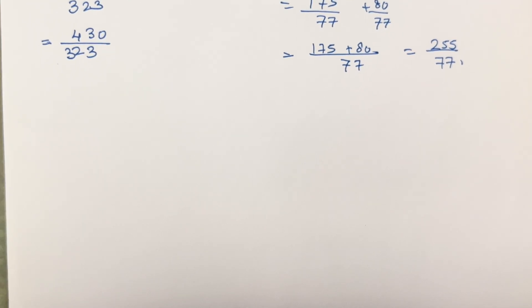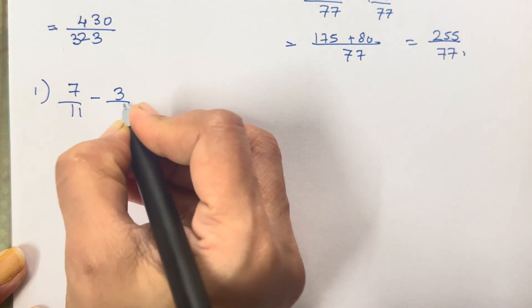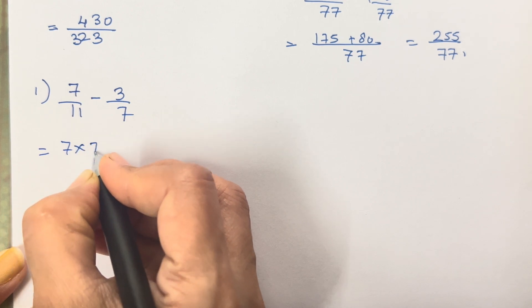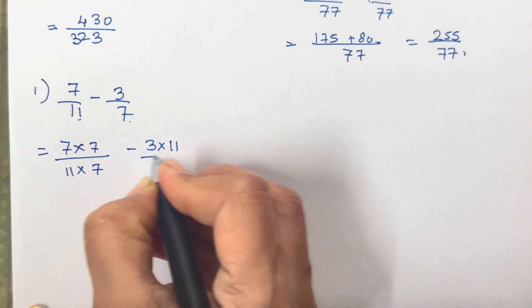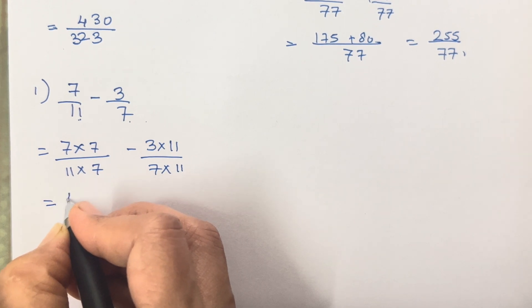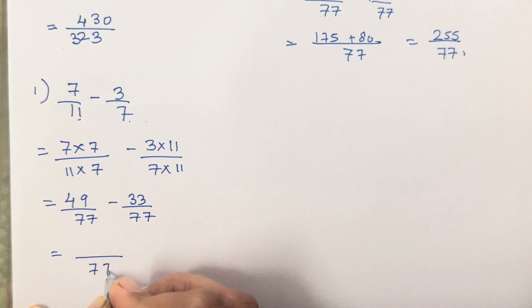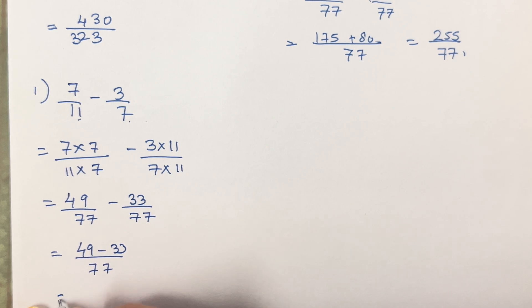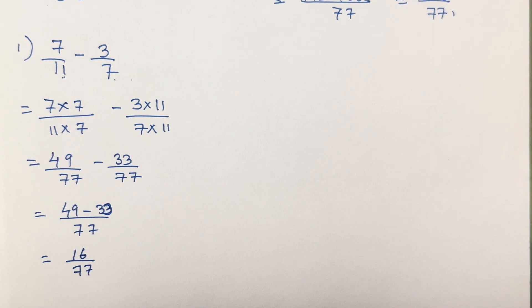Now we will subtract rational numbers. Addition is done; now we will subtract. The first sum is 7 upon 11 minus 3 upon 7. The same steps apply — only subtraction. We multiply 11 with 7 and 7 with 11, giving 7 × 7 = 49 upon 77 minus 3 × 11 = 33 upon 77. This gives 16 upon 77.